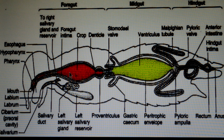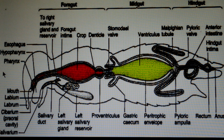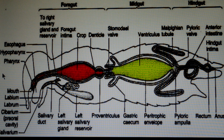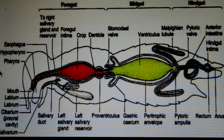The alimentary canal or digestive system is longer in phytophagous insects compared to carnivorous and other insects like detritivorous insects. So the alimentary canal is longer in phytophagous insects.